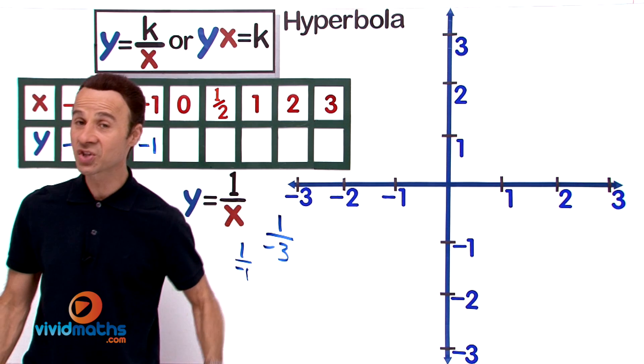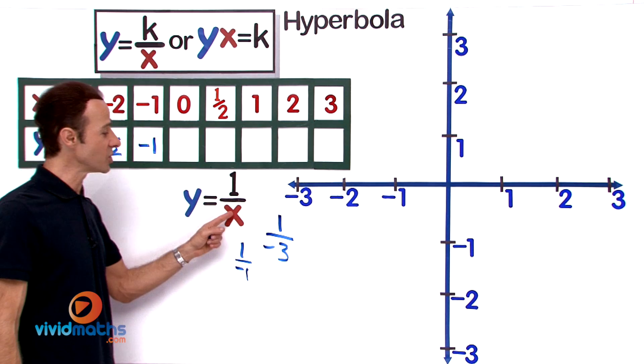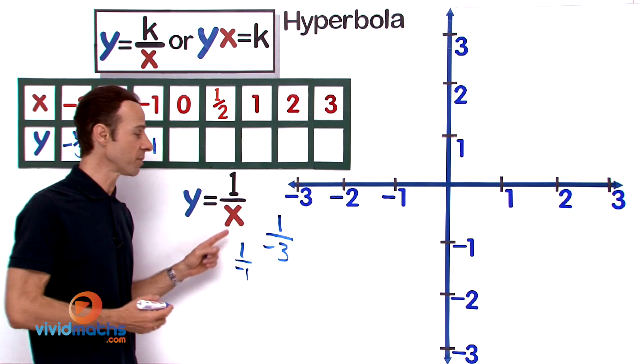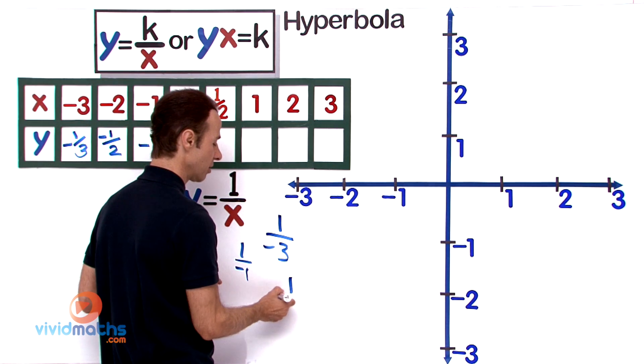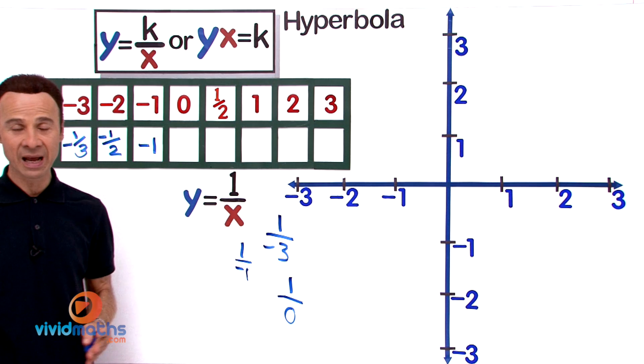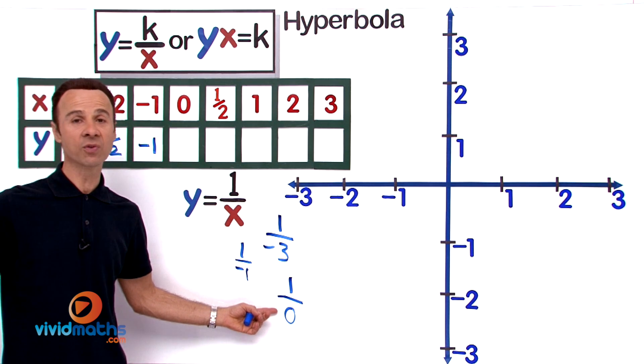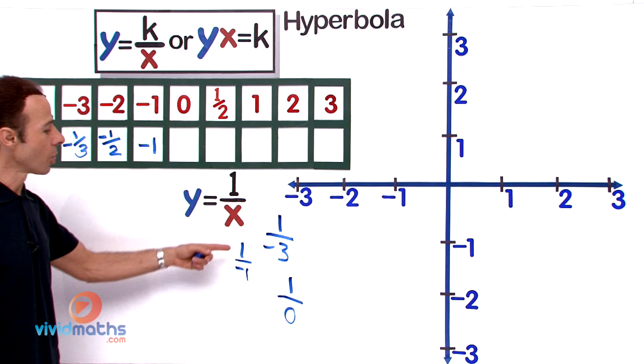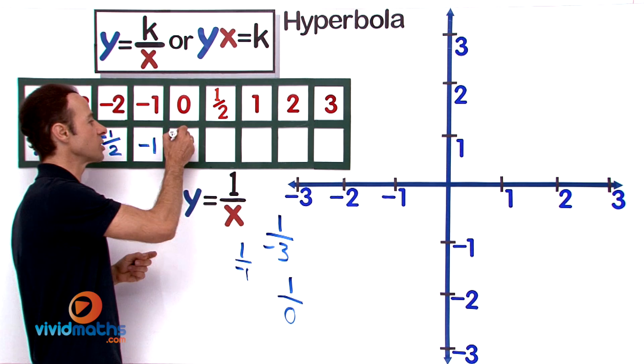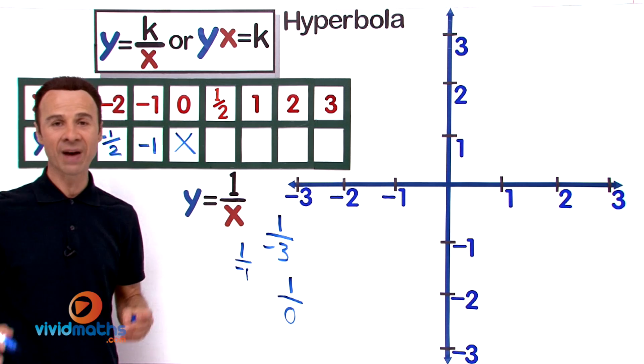This next one is very interesting, it's 0. What happens when we put a 0 on the denominator down the bottom there? Well, 1 over 0 is indeterminable. You cannot actually work it out. In mathematics you can't divide that. Your calculator would probably say you've got an error. So 1 divided by 0 is not possible, so we cross that out. There is no value there.